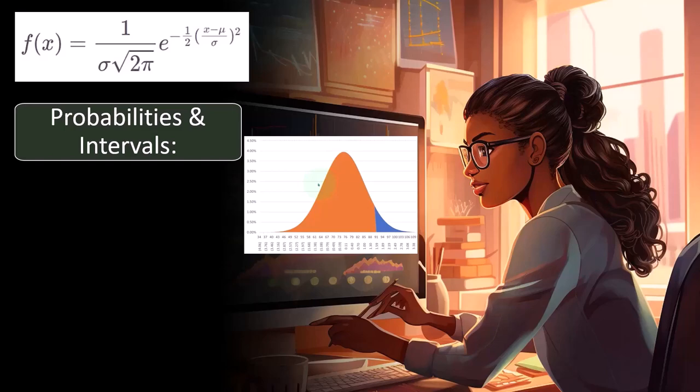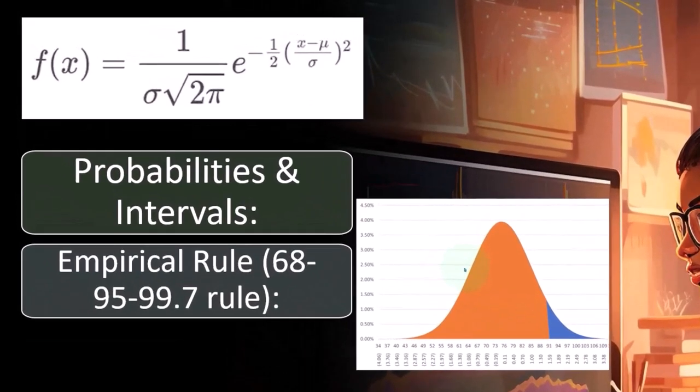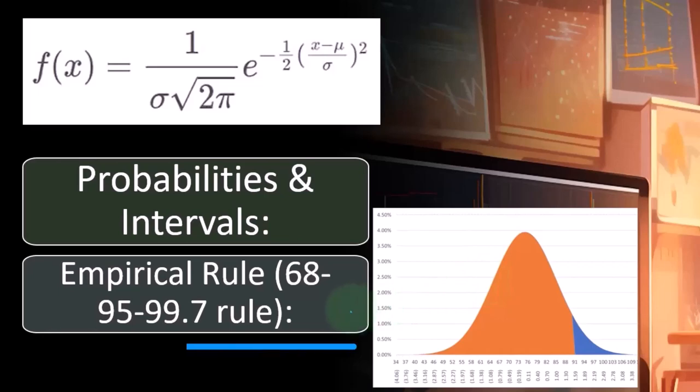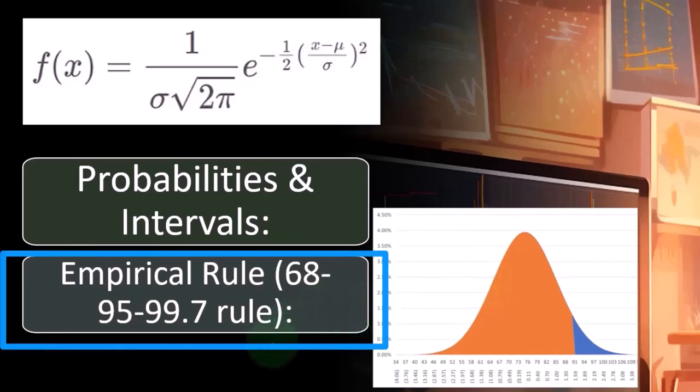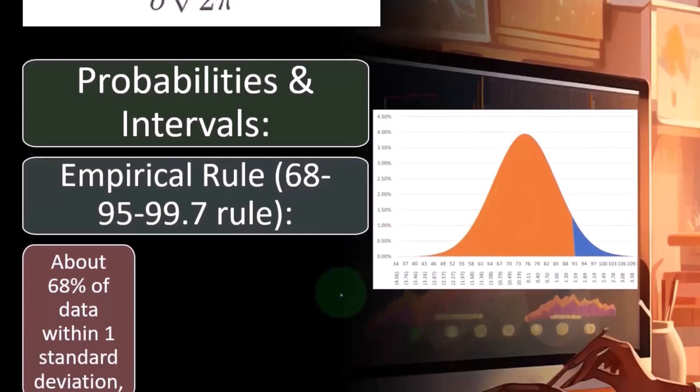Make better predictions about certain types of data sets. So we have the empirical rule, that's the 68-95-99.7 rule. Now you probably want to memorize these numbers. They seem kind of random, but they're so very useful because of the shape and the unique characteristics of the normal distribution.